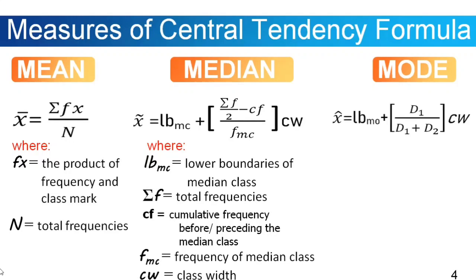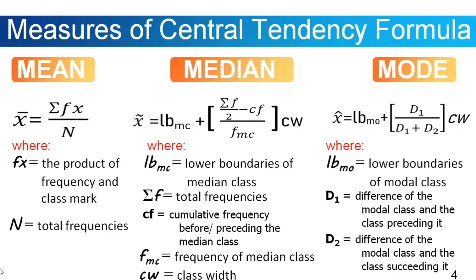Now let's go to the mode formula. x̄ is equal to Lb_mc plus the quantity d1 divided by the sum of d1 and d2, then multiply that with cw. Where Lb_mc is the lower boundary of the modal class, d1 is the difference of the modal class and the class preceding it, and d2 is the difference of the modal class and the class succeeding it.